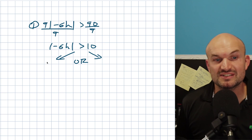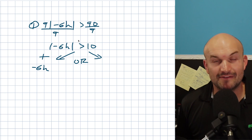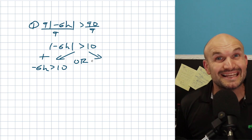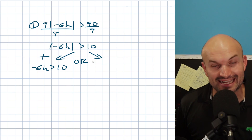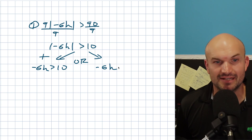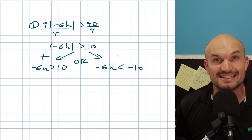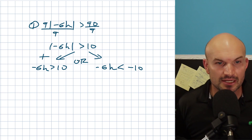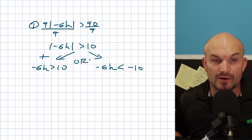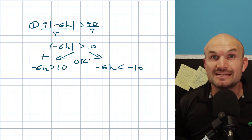What you're simply going to do is first take the positive case — that's just everything without the absolute value. So negative six H is going to be greater than 10. OR, for the negated case, you're going to keep the expression exactly the same — negative six H — but flip the sign and negate the other side of the inequality. We're dealing with an OR, meaning one of them has to be true, but we're not looking for the intersection — that's the AND.